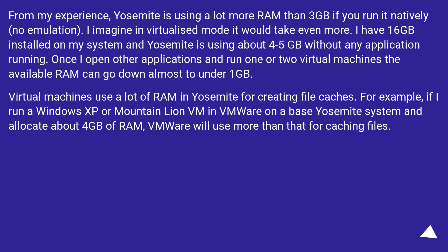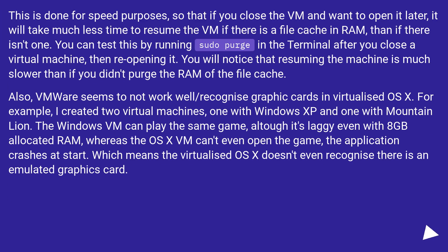Virtual machines use a lot of RAM, and Yosemite creates file caches. For example, if I run a Windows XP or Mountain Lion VM in VMware on a base Yosemite system and allocate about 4 GB of RAM, VMware will use more than that for caching files. This is done for speed purposes — so that if you close the VM and want to open it later, it resumes much faster with a file cache in RAM. You can test this by running sudo purge in the terminal after closing a virtual machine, then reopening it. You will notice that resuming is much slower after purging the RAM file cache.